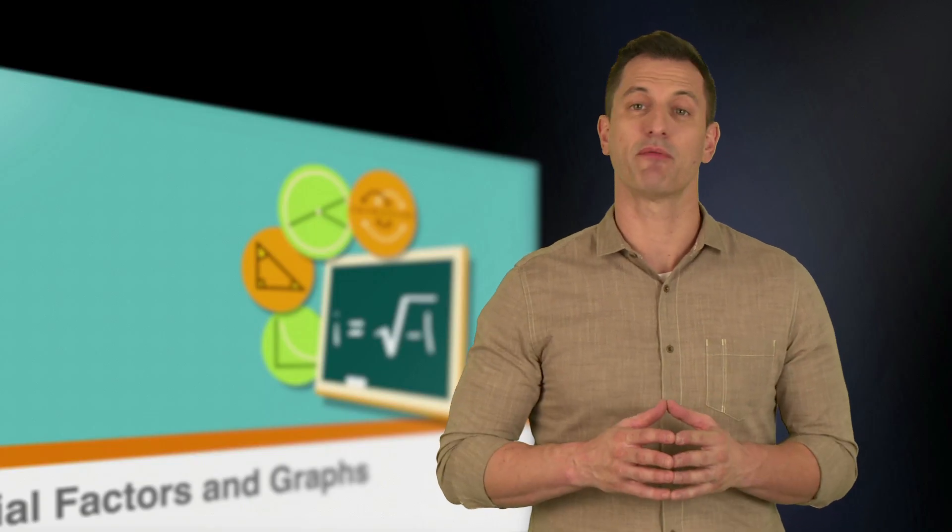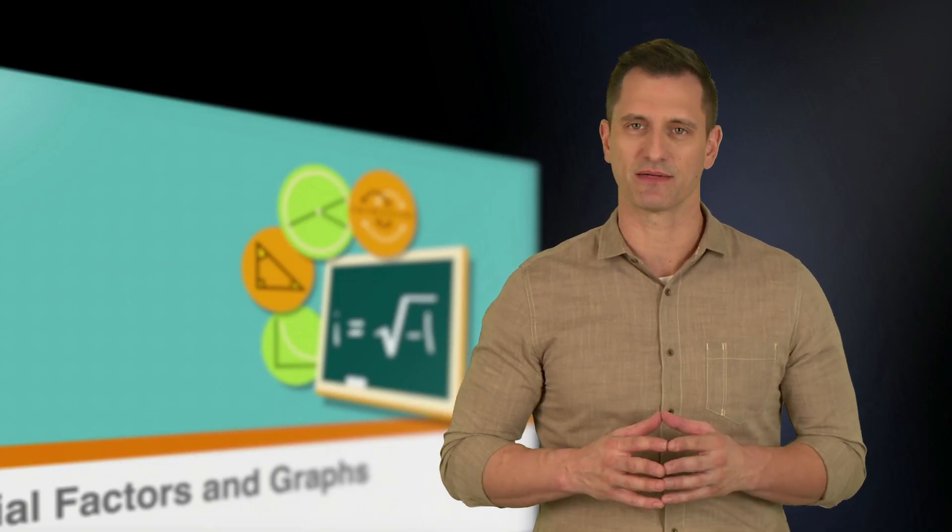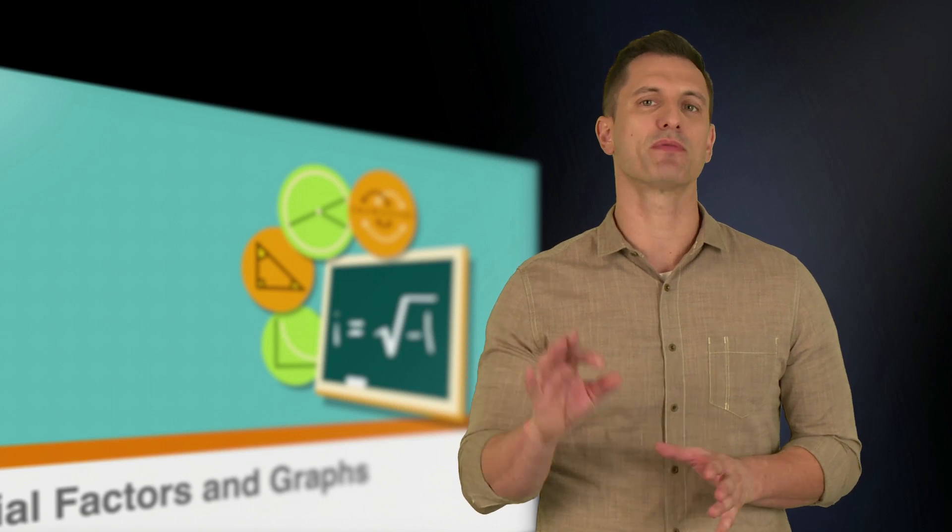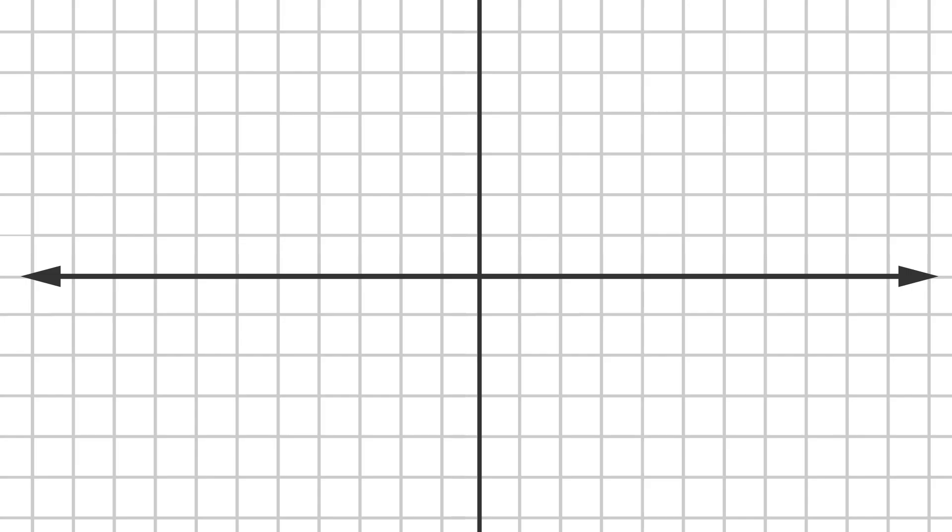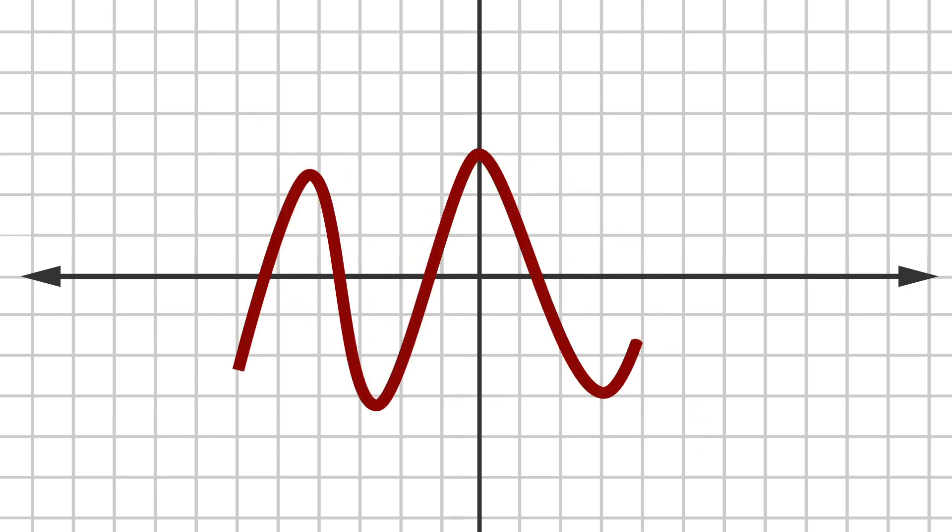Let's take a look at a graph of a polynomial to get a better understanding. The zeros of a graph are the places where y equals zero. In this example, there are three x values for which this polynomial equals zero. Therefore, we can say this polynomial has three zeros. This polynomial has two zeros. Do you know how many zeros this polynomial has? If you said five, you're right.